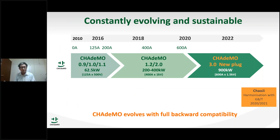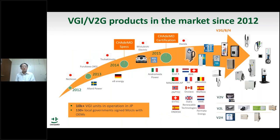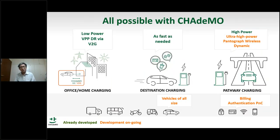Not only the numbers but also the quality — we are always going ahead from the viewpoint of power and functionality. This slide shows the history of CHAdeMO specification versions from 0.9 to 3.0. Not only charging but also bidirectional operation — we have almost 10 years of market-available product history and dozens of market-available products of vehicle-to-X in the global market. I could say that you could do everything with CHAdeMO that you want to do.